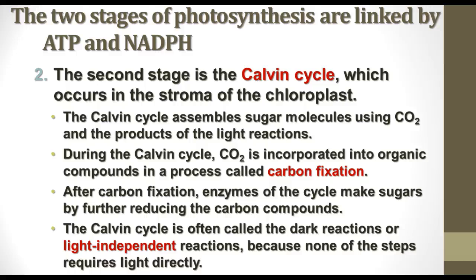The second stage of photosynthesis is the Calvin cycle, which occurs in the stroma of the chloroplast. Similar to the Krebs cycle in cellular respiration, the Calvin cycle occurs in the stroma because that's where the enzymes are located to catalyze the process. It is a cycle of reactions that assembles sugar molecules from carbon dioxide using the energy from NADPH and ATP produced in the light reactions. This process is called carbon fixation, and the enzymes in this cycle further reduce the carbon compounds into sugars — ultimately producing glucose.